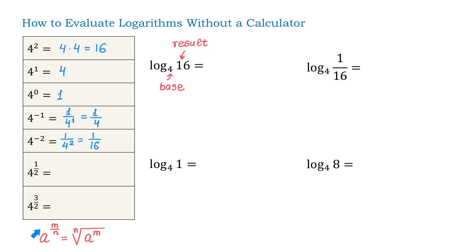We have a definition: if a is raised to a fraction m over n, then we can write it in radical form, and that will be the nth root of a to the power of m. According to this definition, we can write 4 to the power of 1 half as square root of 4, where 1 is the exponent of 4 and 2 is the index. Then, square root of 4 equals 2.